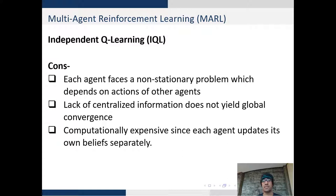Lastly from an implementation point of view independent Q-learning is computationally expensive since each agent needs to update its belief consecutively.